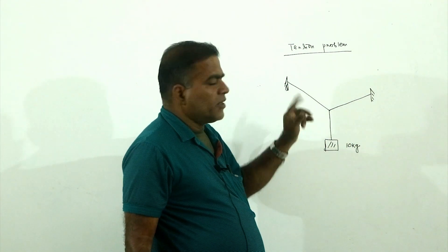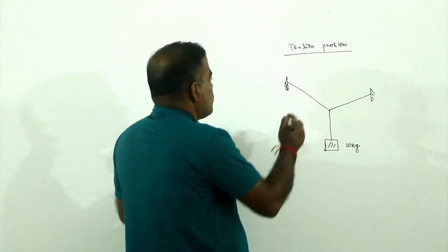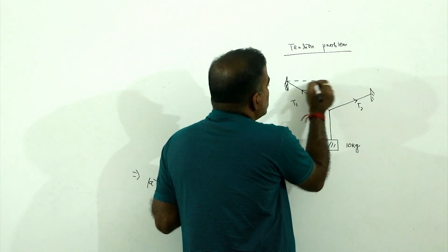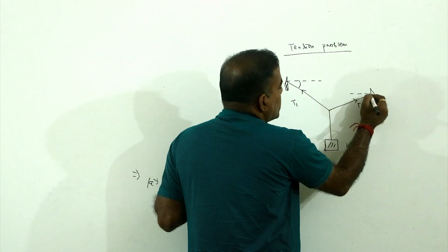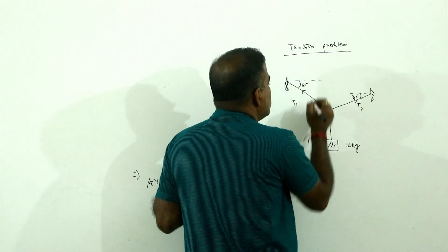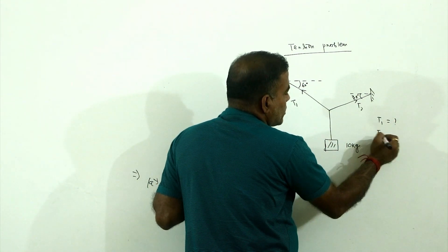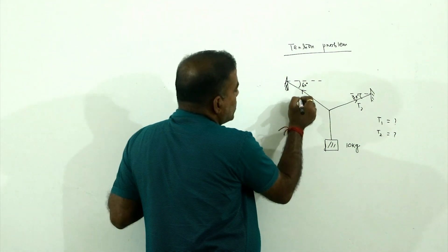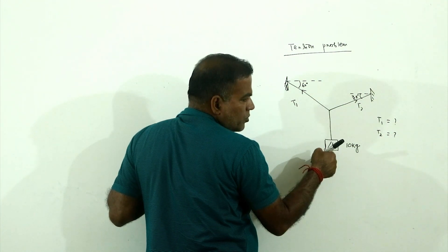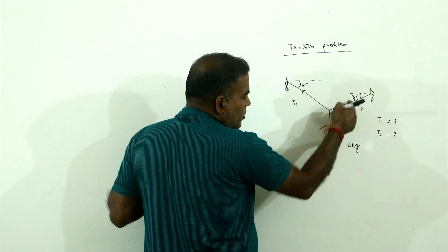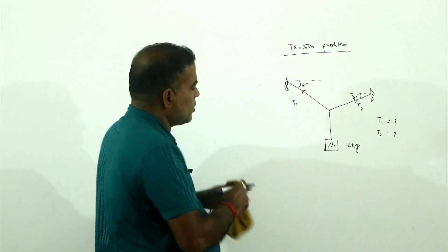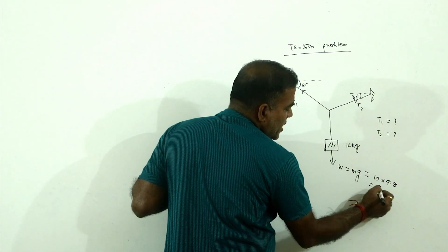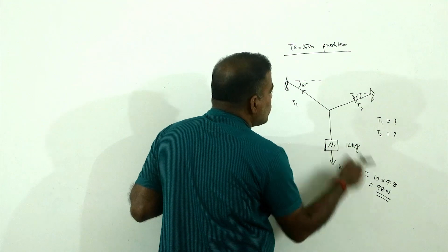Now we have a tension problem. This reaction will be a tension. Take this tension as T1 and the other as T2. The angle is 30 degrees on one side and 30 degrees on the other. The weight is 10 kg, so the force is 10 × 9.8 = 98 Newton.